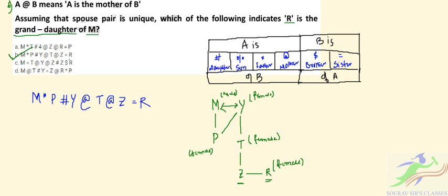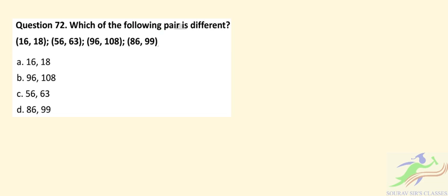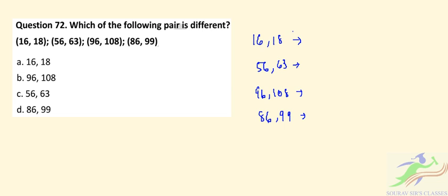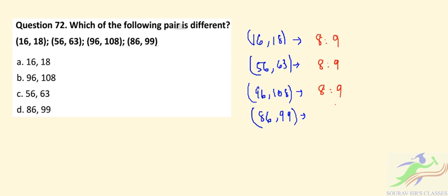Question 72 asks which of the following pairs is different. The pairs given are: 16,18 — 56,63 — 96,108 — 86,99. Checking the ratio of each pair: 16:18, 56:63, and 96:108 all simplify to 8:9. However, 86:99 does not equal 8:9. So the pair that is different is 86, 99 — the correct option is Option D.